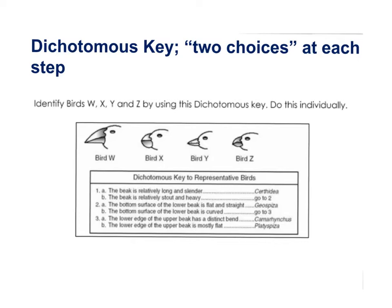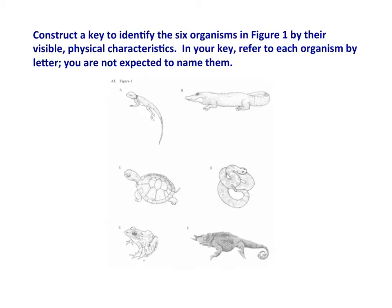Here is another linear dichotomous key. To identify bird X: is the beak relatively long and slender, or stout and heavy? It's stout and heavy — go to step two. Is the bottom surface of the lower beak flat and straight, or curved? It's curved — go to step three. Is the lower edge of the upper beak distinctly bent, or mostly flat? It appears mostly flat — so this bird is Platyspiza. Now here's a chance to practice: construct a key to identify the six organisms in the figure by their visible physical characteristics. Avoid vague terms; assume nothing from what you cannot see in the diagram. Turn the movie off now and get to work.